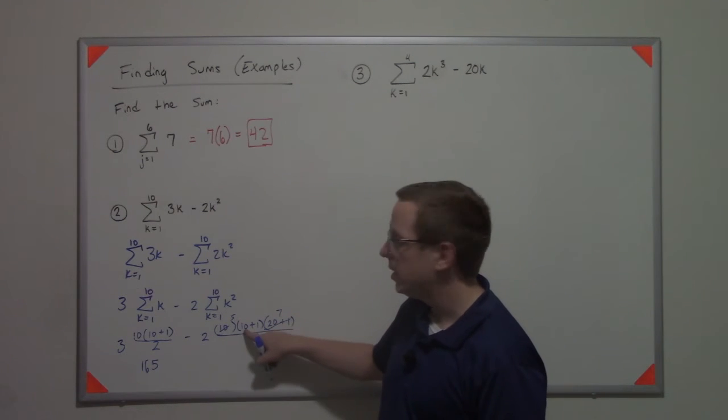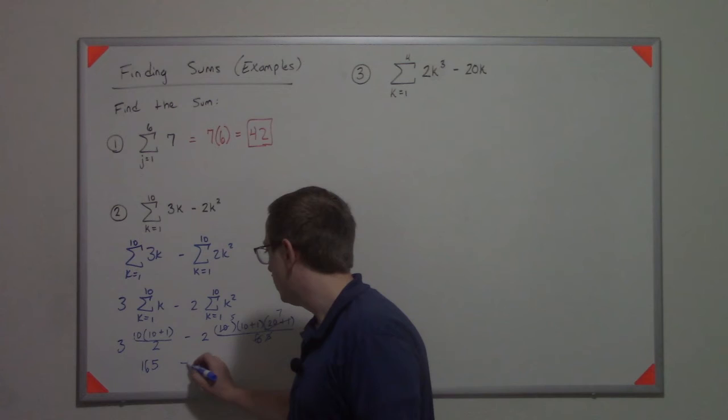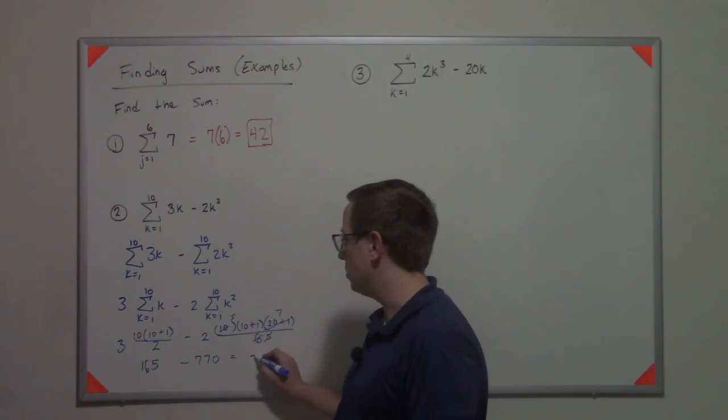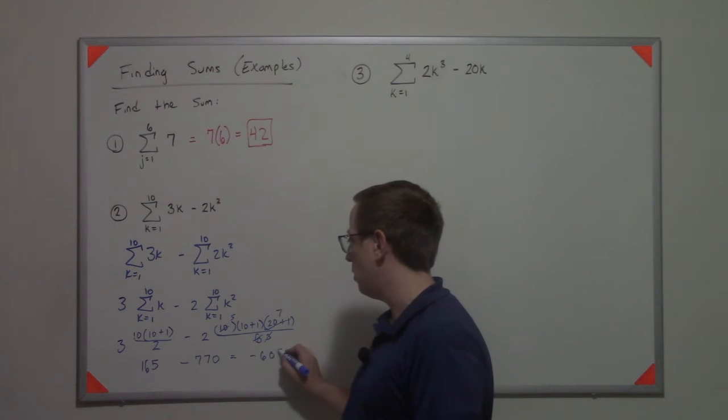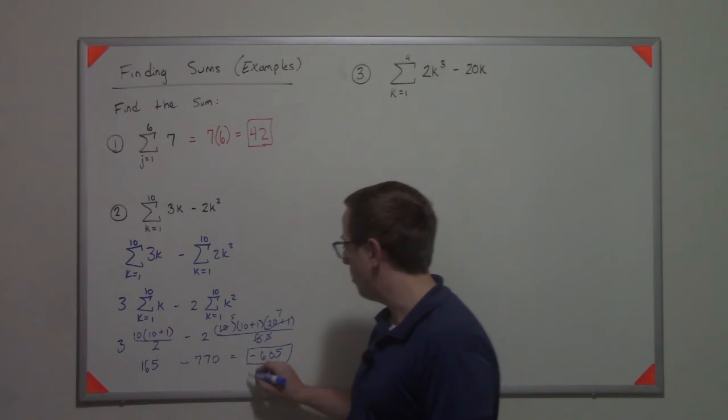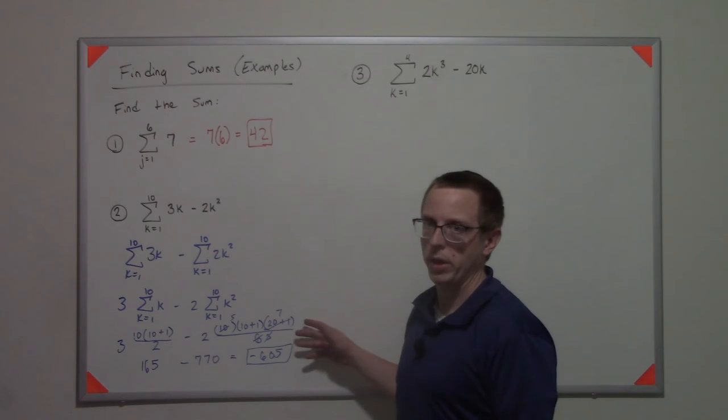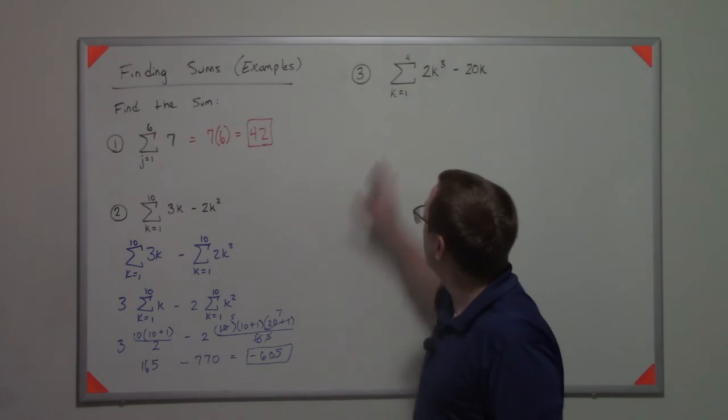Which is minus 770, which equals negative 605. I believe is the right answer. If it's not, eh, whatever. You get the point. Now up here, I have k equals 1 to 4 of 2k cubed minus 20k.